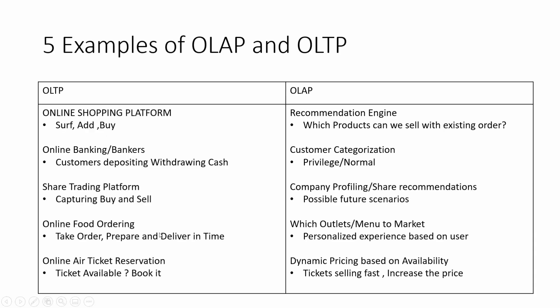Another example of an OLTP system is a share trading platform — it captures the number of shares sold, the rate at which they are sold, and other things like date and time. While an OLAP system will recommend the stocks to invest in, near-future forecasts, and similar things. Online food ordering apps are a good example of an OLTP system — thousands of users ordering in parallel with simple operations: order, track, and deliver. Which outlets to promote, which products to pitch, and a personalized user experience are all driven by analysis in an OLAP system.